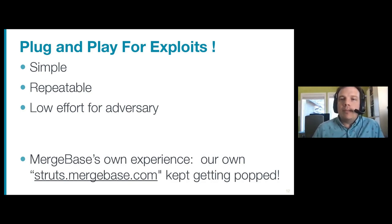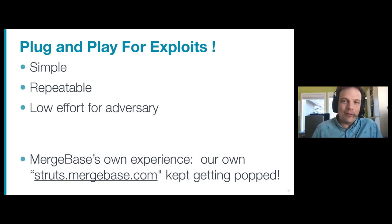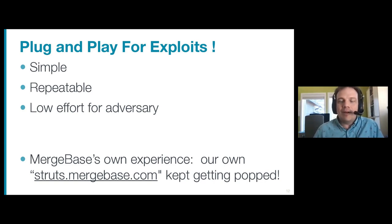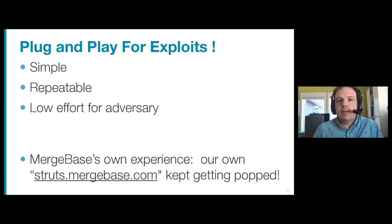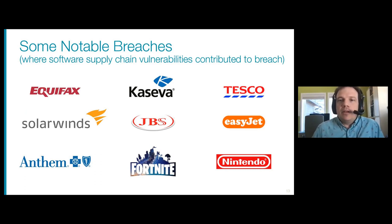We run a website for demonstration purposes called struts.mergebase.com, and three or four times a year it was getting popped. None of our main website referenced this, it was not in Google's index, there was no way to click to it. And yet adversaries — we traced them back to China — were able to get in. They were using 100% CPU, which is how we noticed our demonstration system had been compromised. Here's a number of breaches in the last five years where software supply chain vulnerability was a contributing factor.